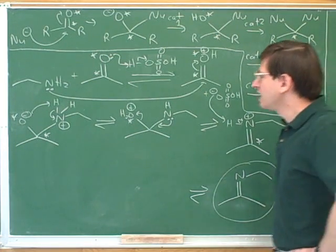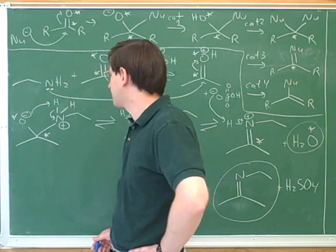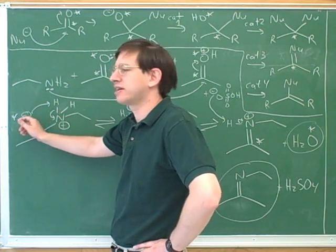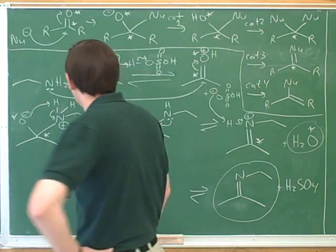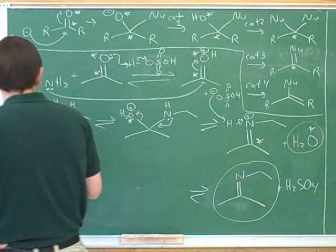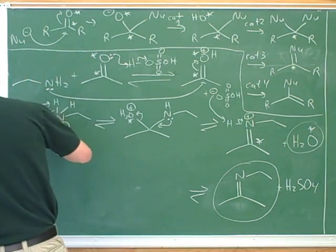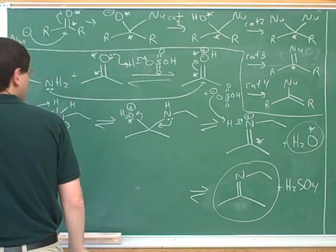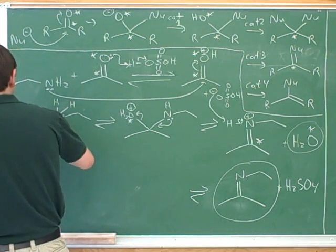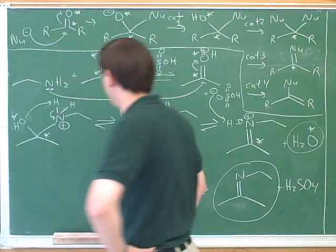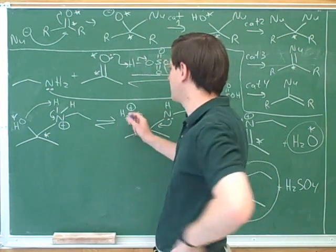We end up with this. Notice what we have here is a proton transfer, where we transfer the proton from this nitrogen to this oxygen. A student noted a missing H — the oxygen should be OH, so this really shouldn't have been negative; it should just be neutral. Good catch — that gives us a positive charge here.